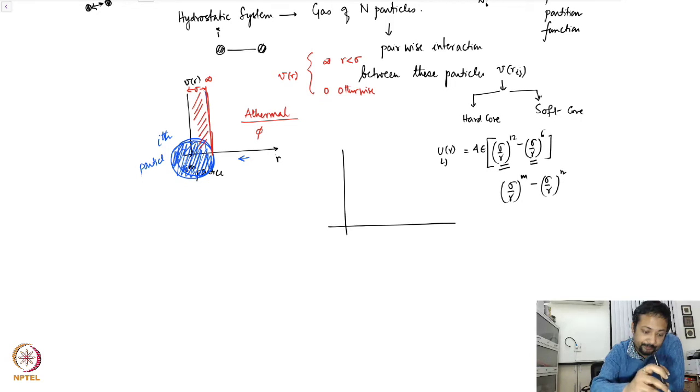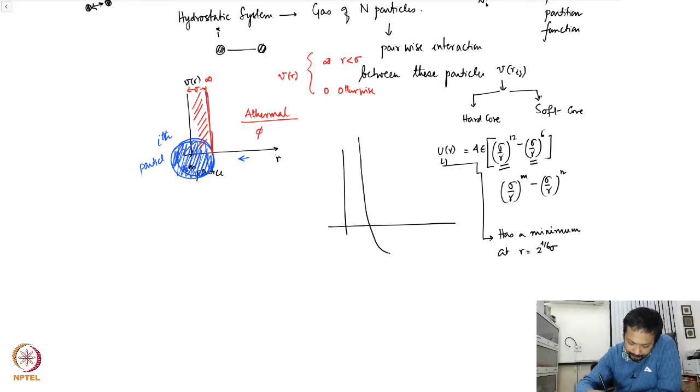But the bottom line is if you plot now you see this part, the potential has a minimum at r is equal to 2 to the power 1/6 sigma, not exactly sigma but close to sigma. So this potential is very steep but it shows an attractive basin and then vanishes and this is where it's 2 to the power one sixth of sigma. Now this is a soft potential.